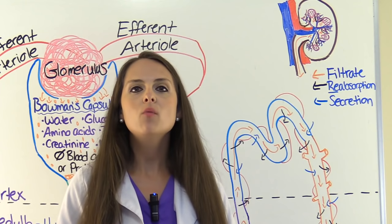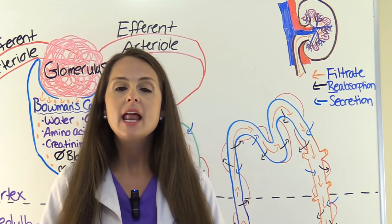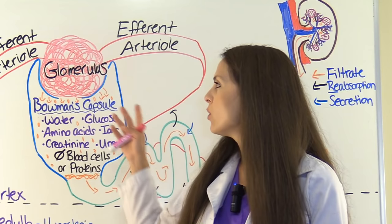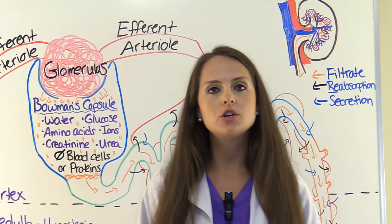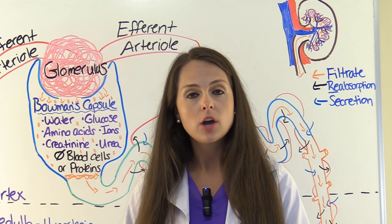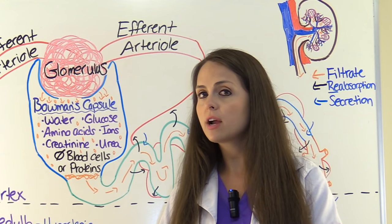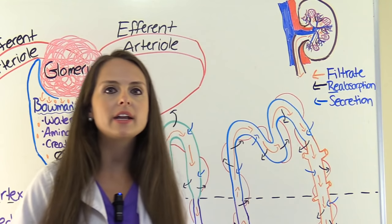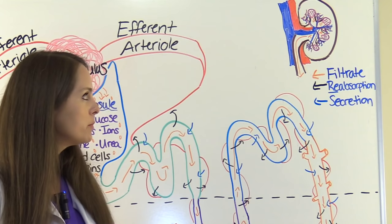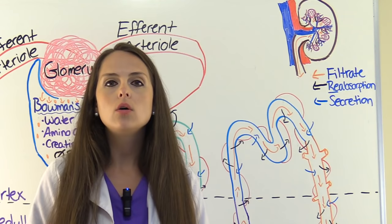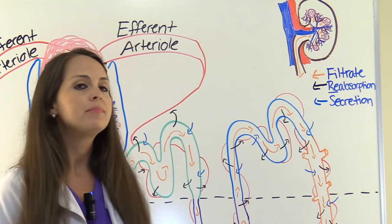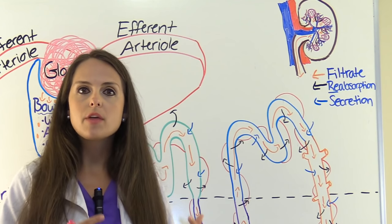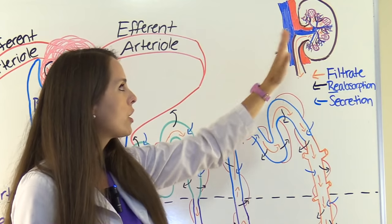In the previous video, we went over kidney and nephron anatomy. Now we're going to take it a step further and dissect this nephron, paying close attention to what is being filtered, what is being reabsorbed from that filtrate, and what is being secreted into that filtrate, which can leave the body as urine. The whole role of our kidneys is to filter our blood, receiving fresh oxygenated blood from the heart via the renal artery.